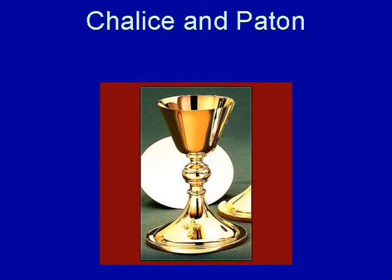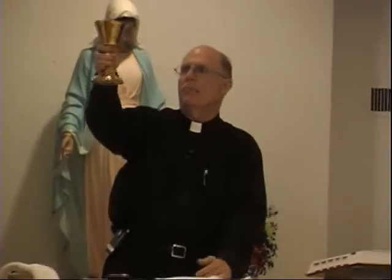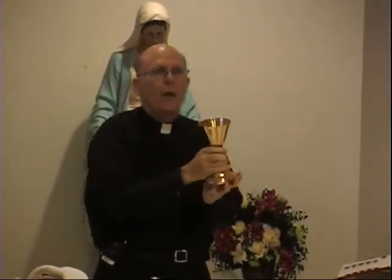The next thing we do when we prepare the altar for the Liturgy of the Eucharist is we bring up the chalice and paten. Chalices are of all kinds of shapes and varieties, but the interior is always lined with precious metal, usually gold, because the wine will be transformed into the blood of Jesus Christ — truly his blood. So we use a vessel that is worthy of that. The requirement is that the interior would always be gold, and oftentimes the exterior is either silver or gold as well, using precious metals.